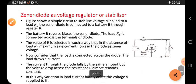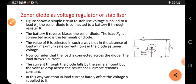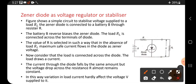See here, from the figure. The figure shows a simple circuit to stabilize voltage supplied to a load RL. What is the load? That is a resistor where we can take the output. The Zener diode is connected to a battery B through resistor R.